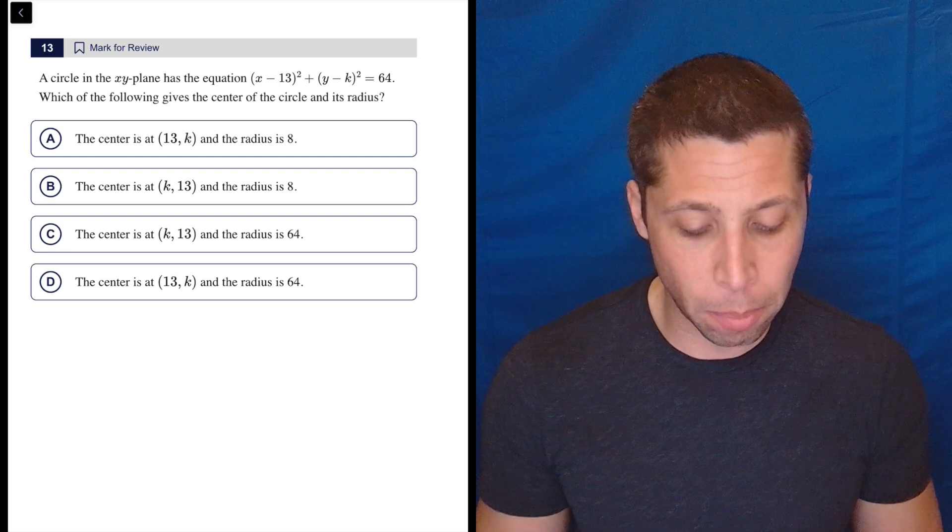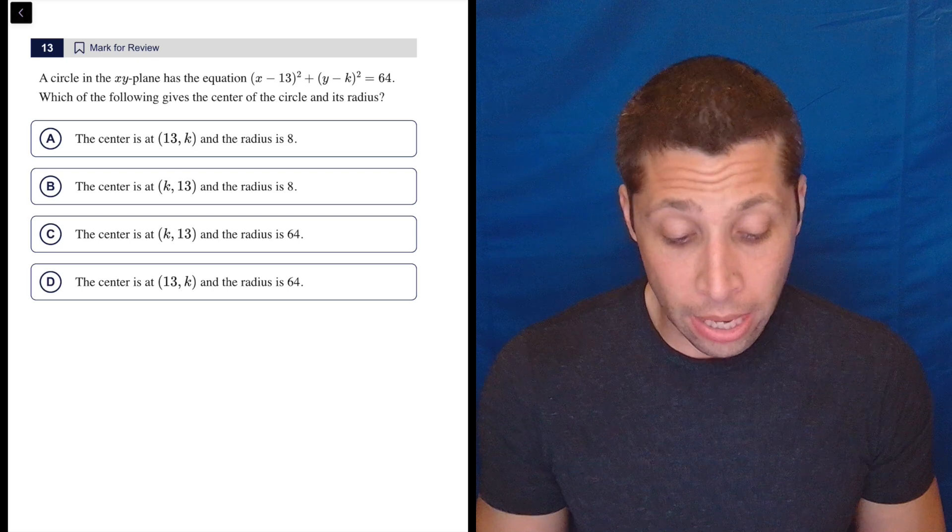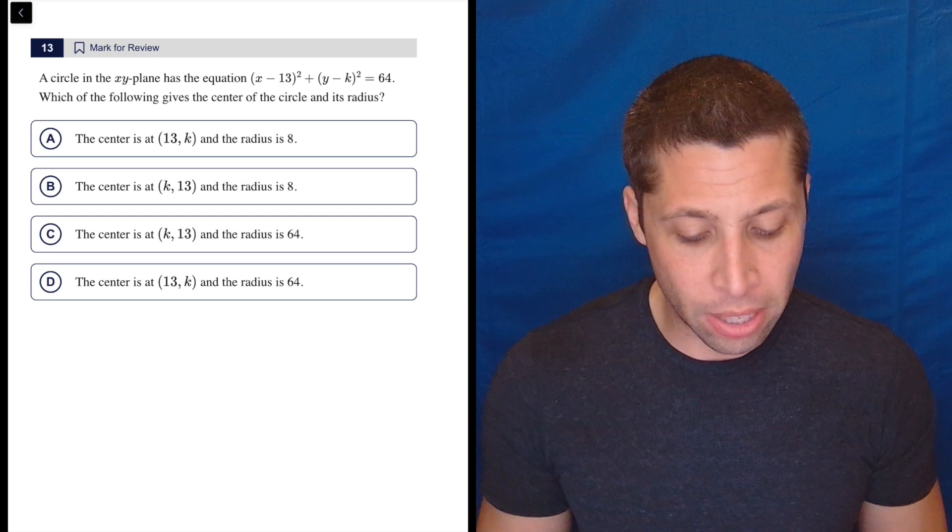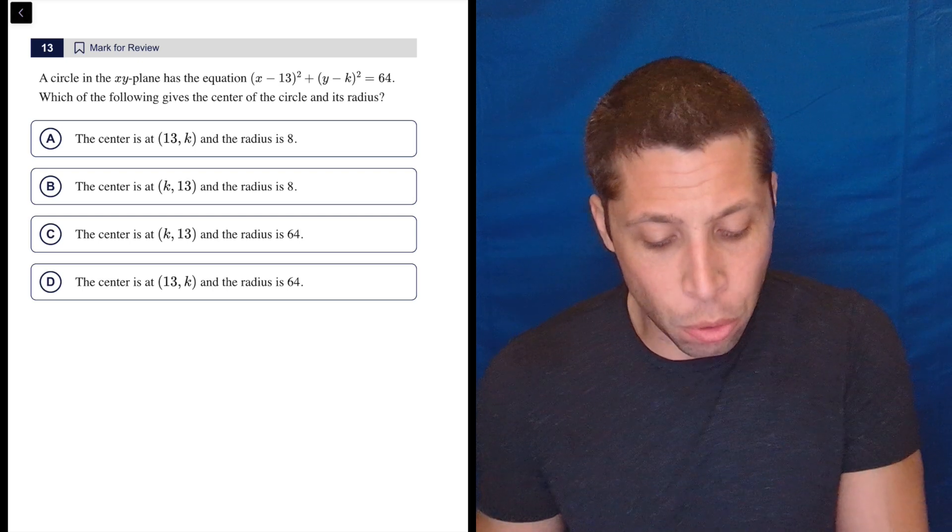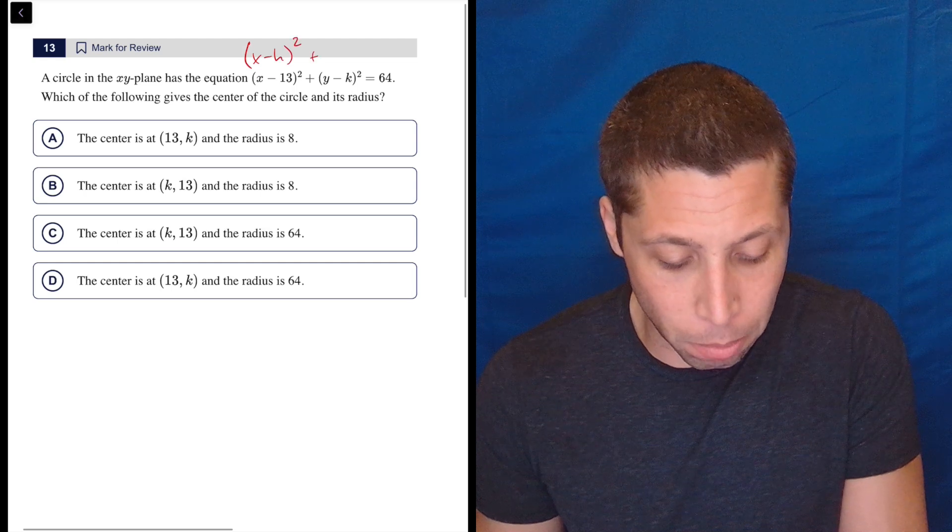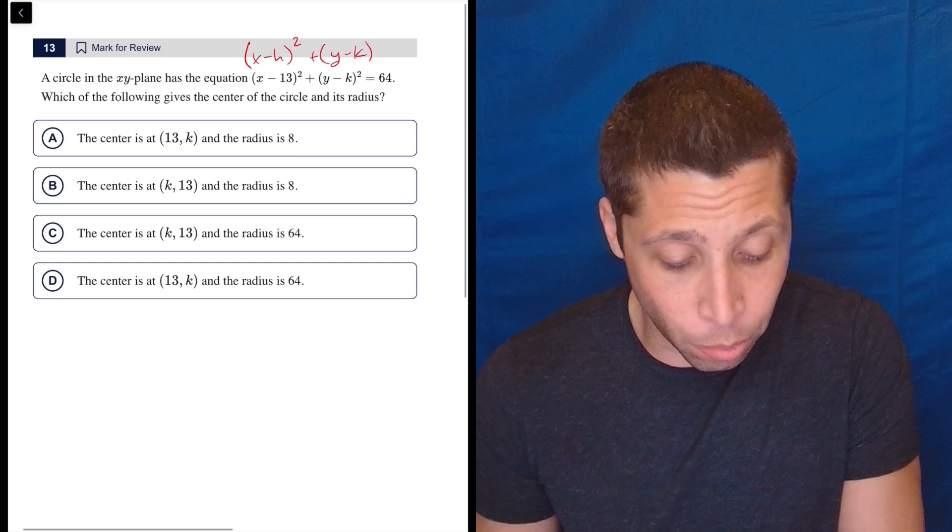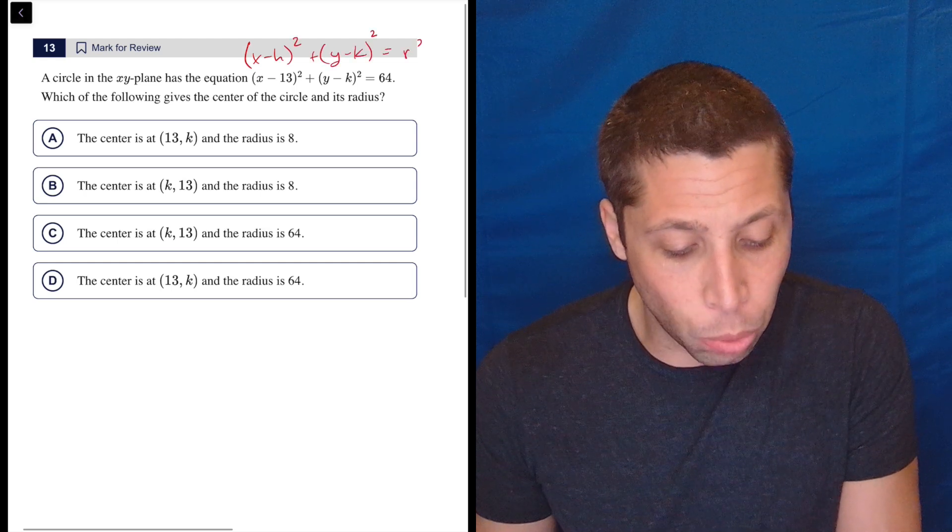So a circle in the xy-plane has the equation (x - 13)² + (y - k)² = 64. Which of the following gives the center of the circle and its radius? Well, the normal equation is (x - h)² + (y - k)² = r².